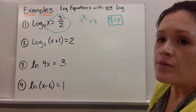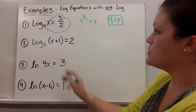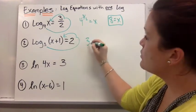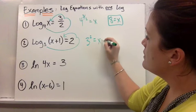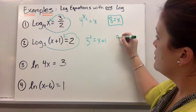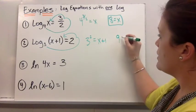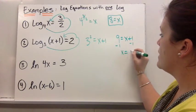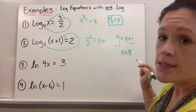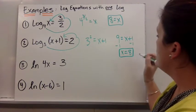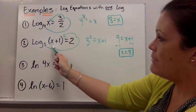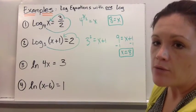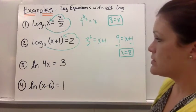For number 2, I have log base 3 of x plus 1 equals 2. Rewriting it without the log: 3 squared is equal to x plus 1. So 9 equals x plus 1, which means x equals 8 again — just by coincidence that they both equal 8. If I check my 8, then 8 plus 1 is 9, so I'm not taking the log of a negative in the original problem. That one looks fine.